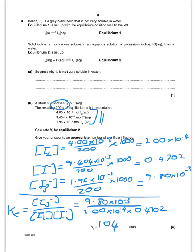For units, concentration is in mol dm⁻³, so you have mol dm⁻³ on the top divided by mol dm⁻³ squared on the bottom. That cancels, so the units are dm³ mol⁻¹.